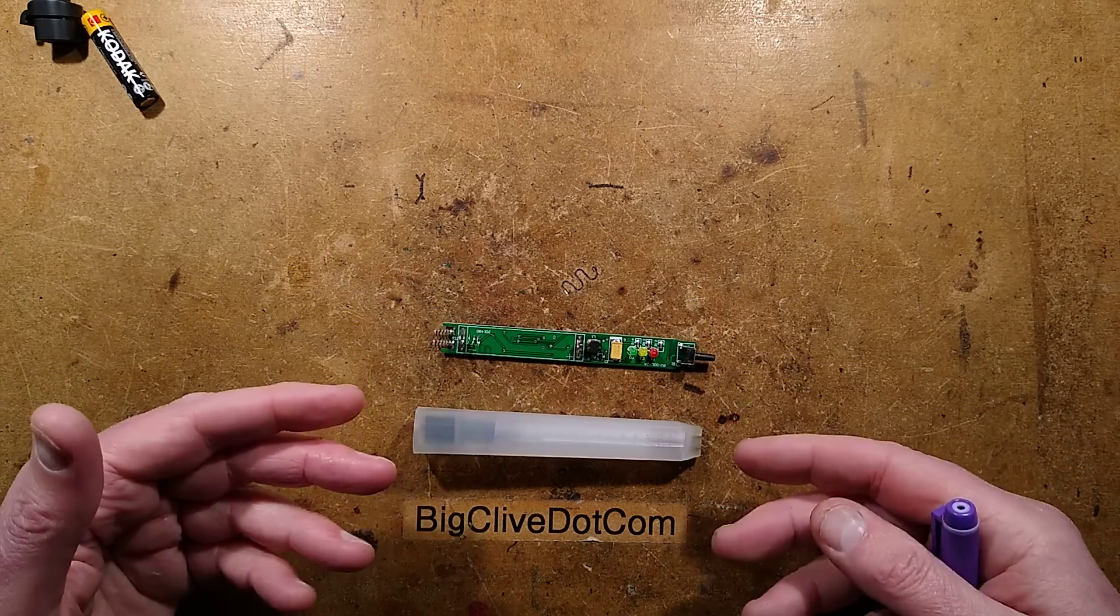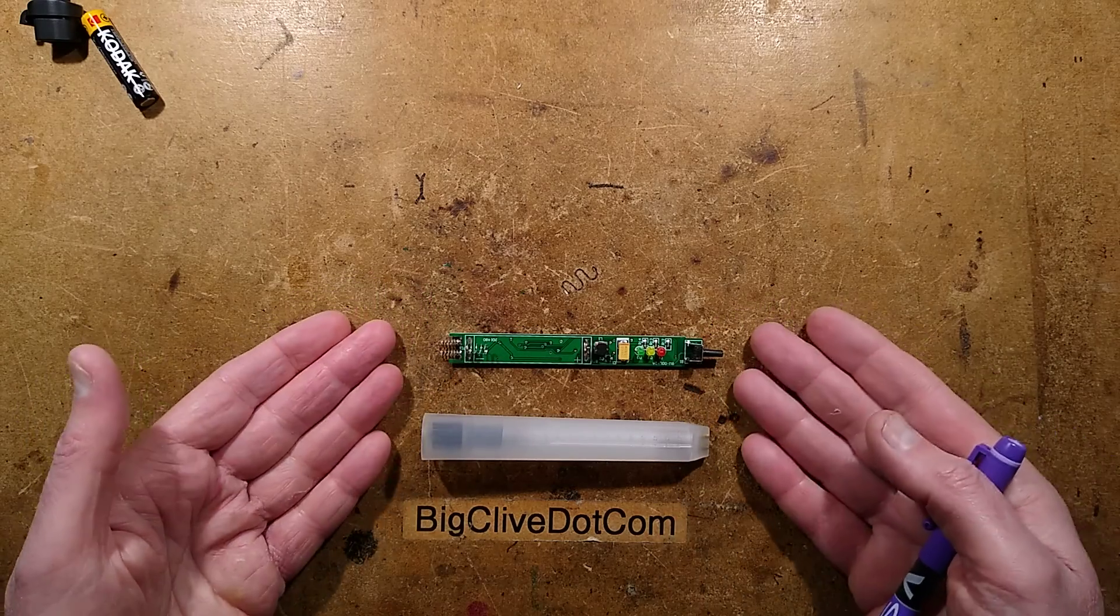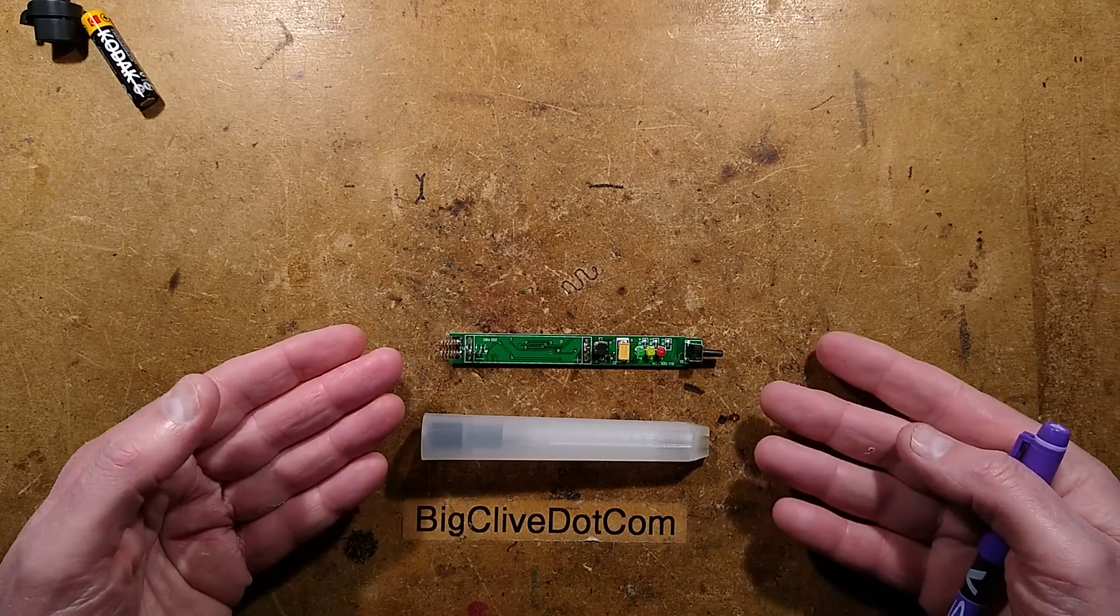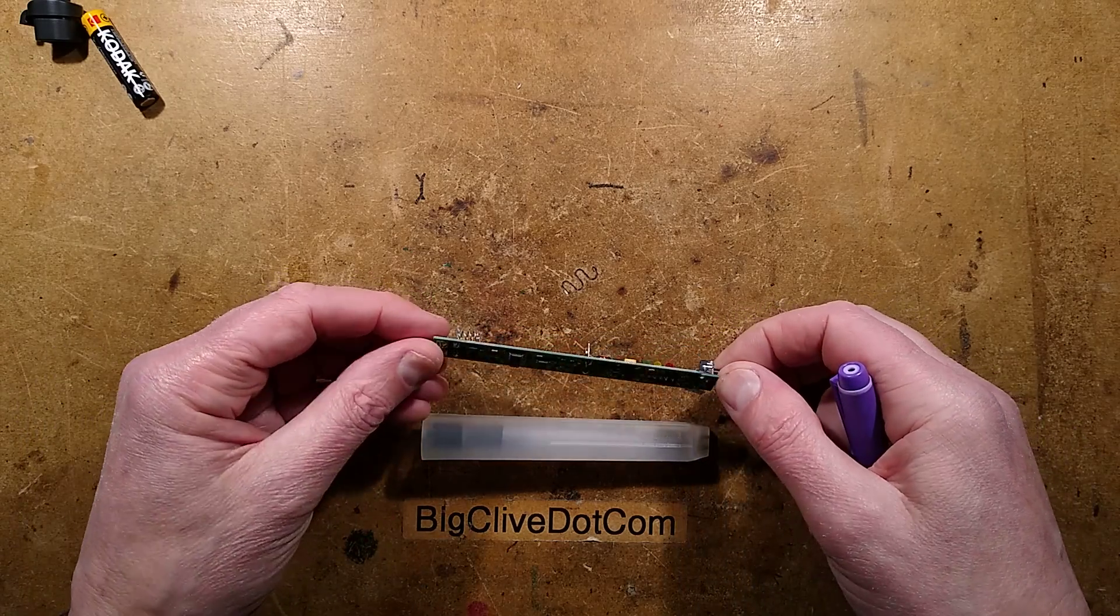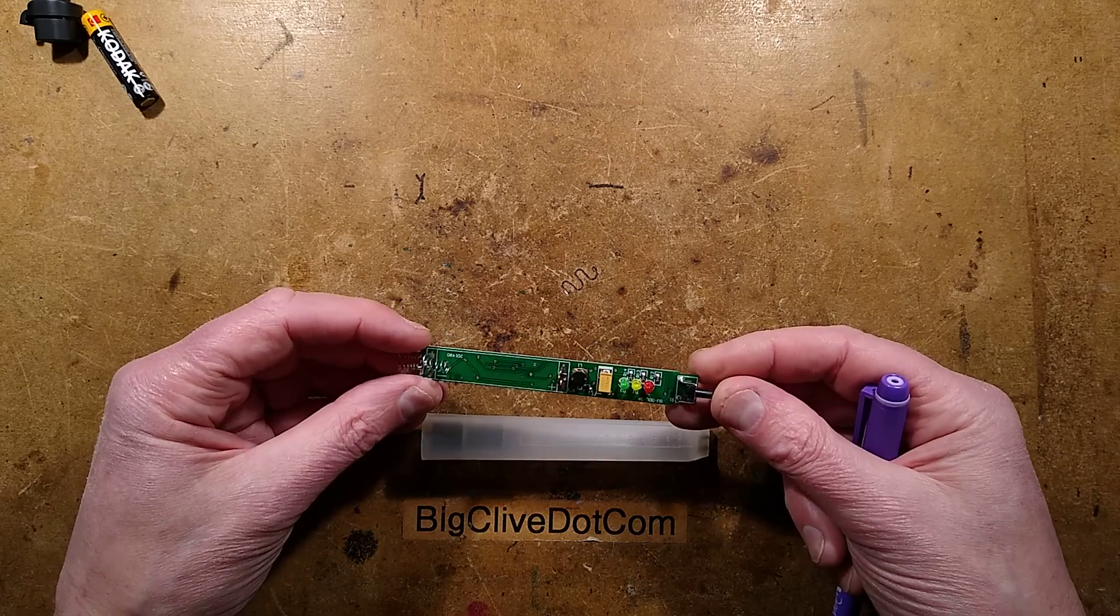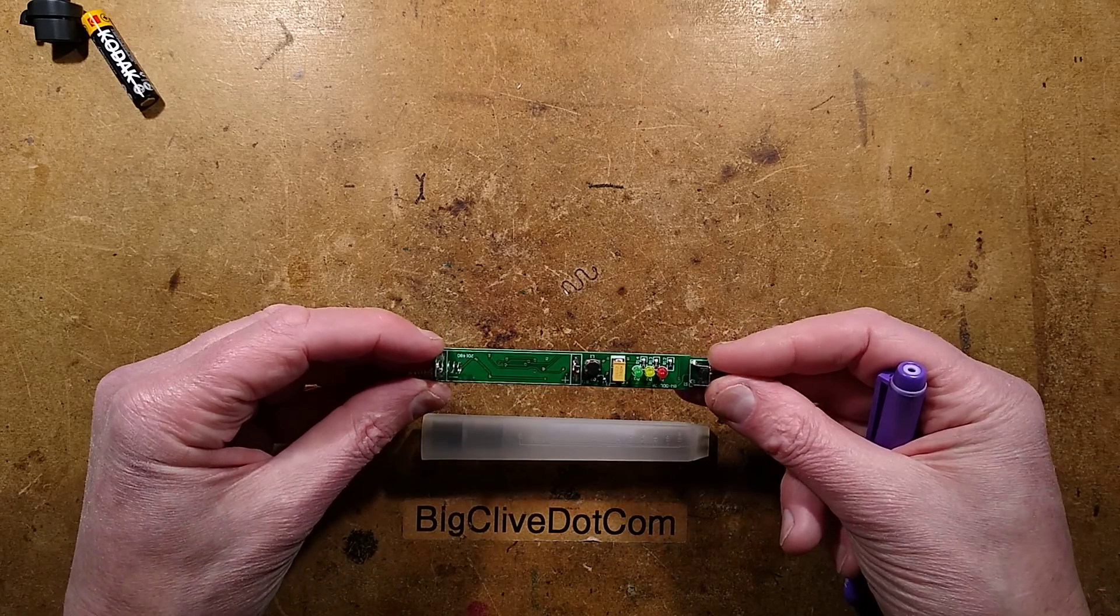Also, glycol being moisture absorbing tends to hang around. If it gets on the surface, it will just stay wet on that surface because it absorbs moisture from the air. But very interesting circuitry. Works a completely different way than I was expecting.